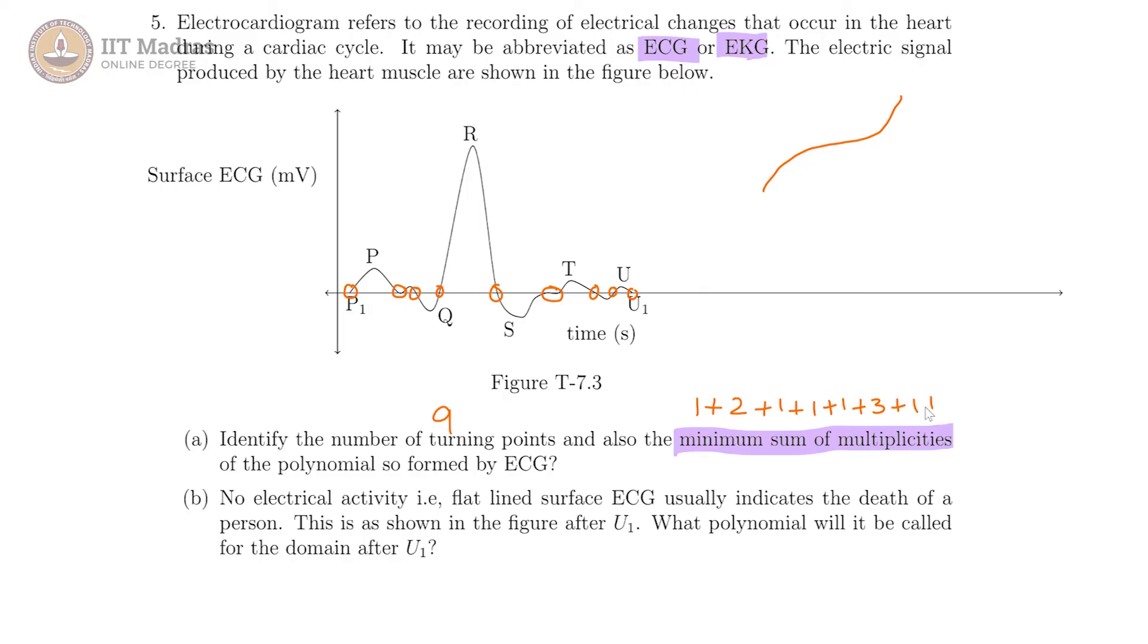So plus 1 plus 1 plus 1, which gives us all put together: 3, 4, 5, 6, 9, 10, 11, 12. So the minimum sum of multiplicities is 12.